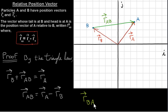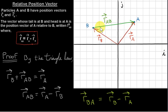Suppose we want the position vector of B relative to A. This will be written RBA. We look at the first letter in the subscript, which is B, so we get Rb minus Ra. So this vector is opposite in direction to RAB — same magnitude, but obtained by negating RAB. The head of RBA is at particle B, and the tail is at A. So RBA is just minus RAB.